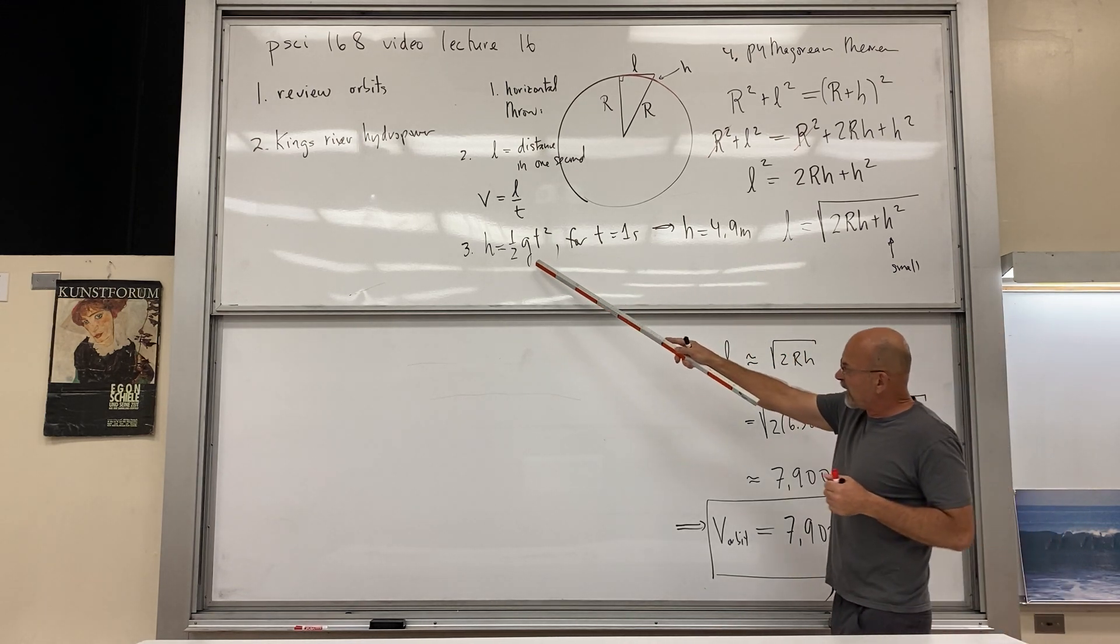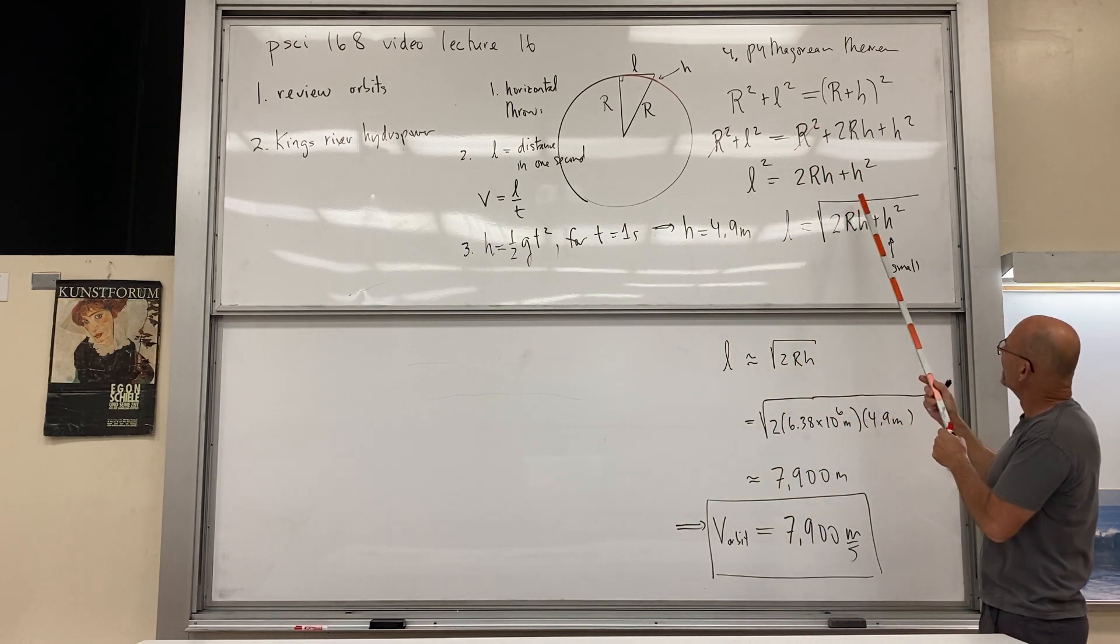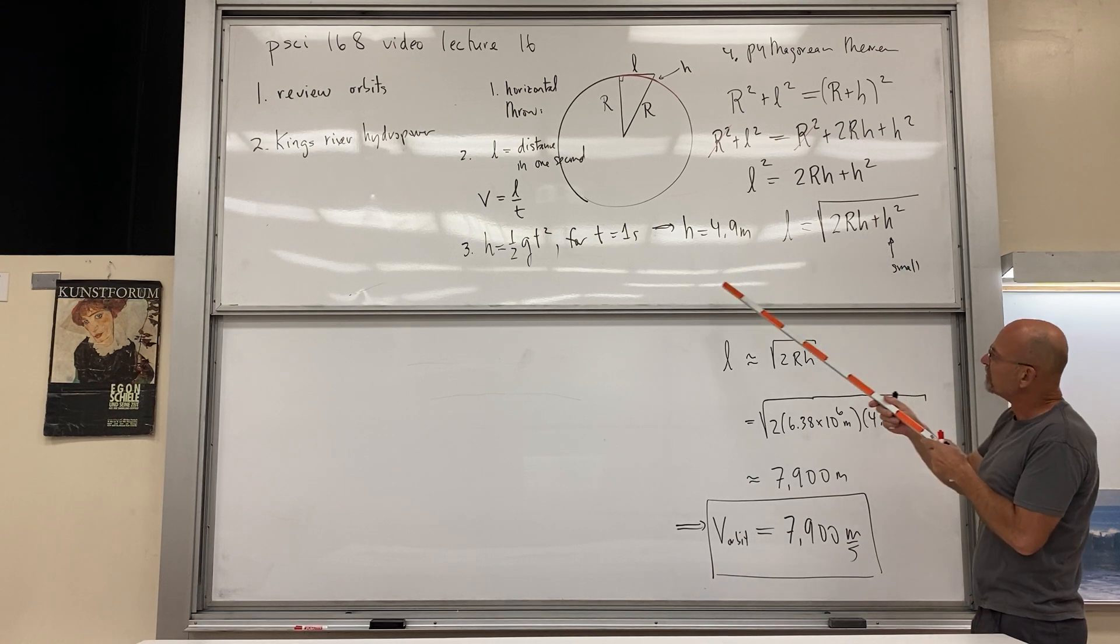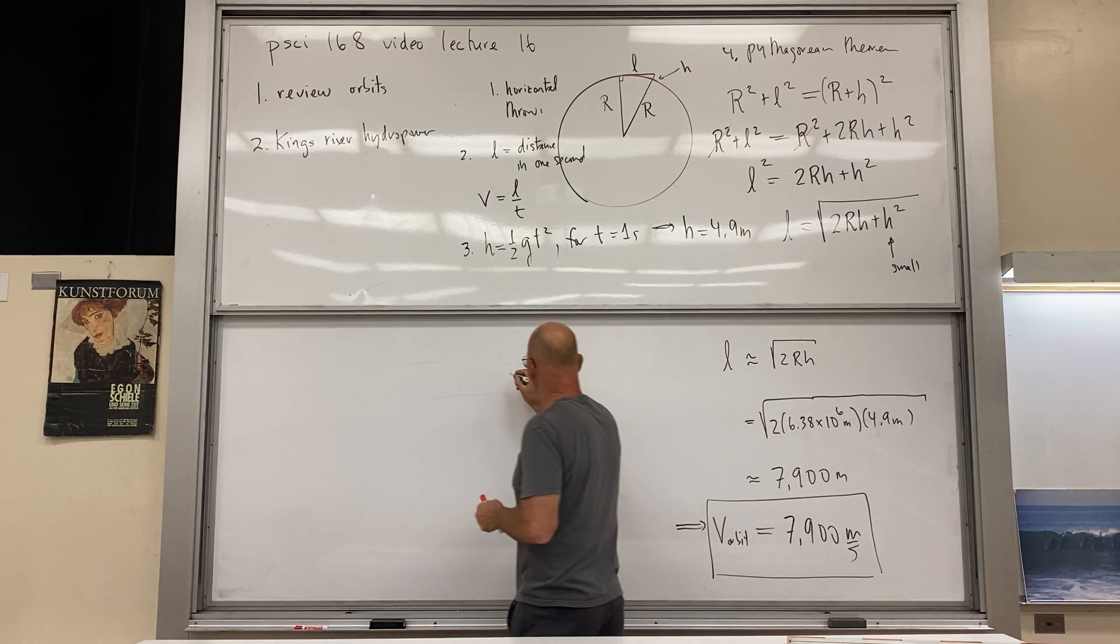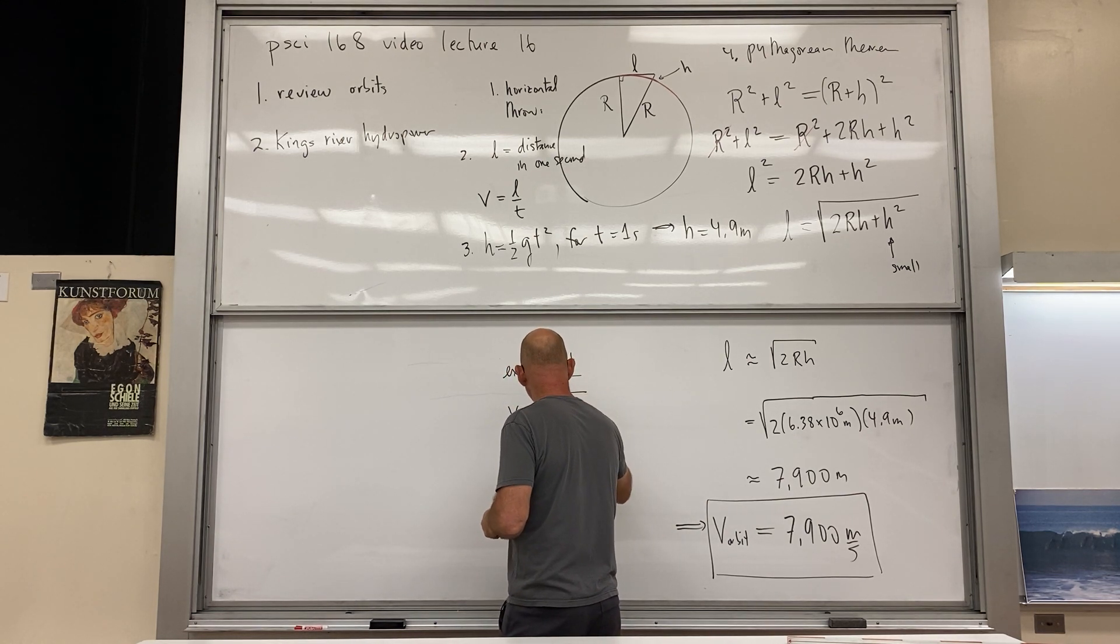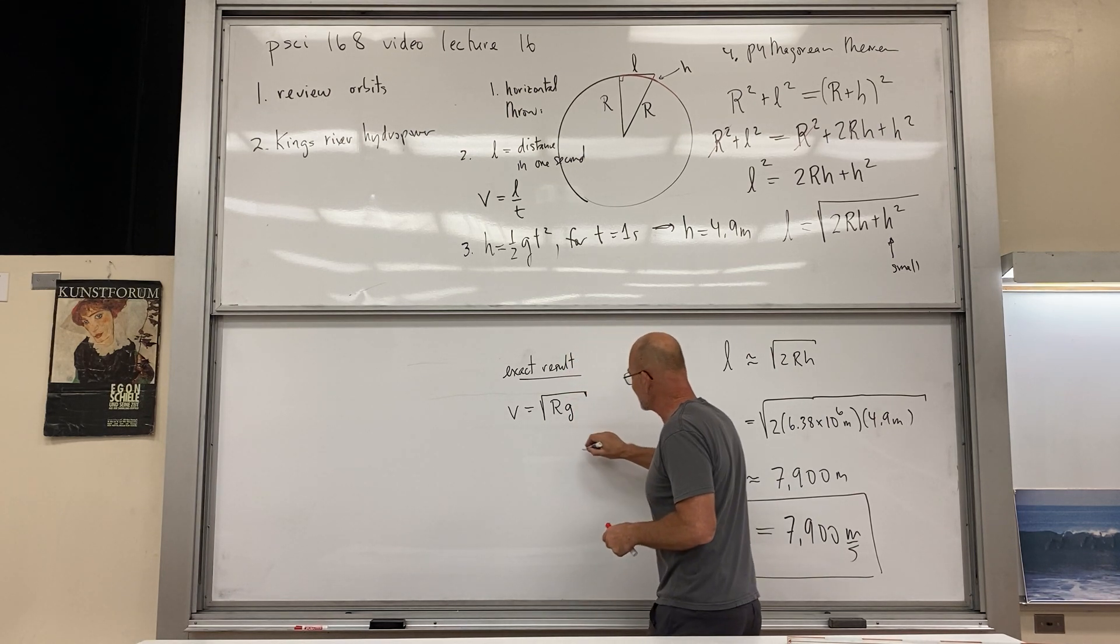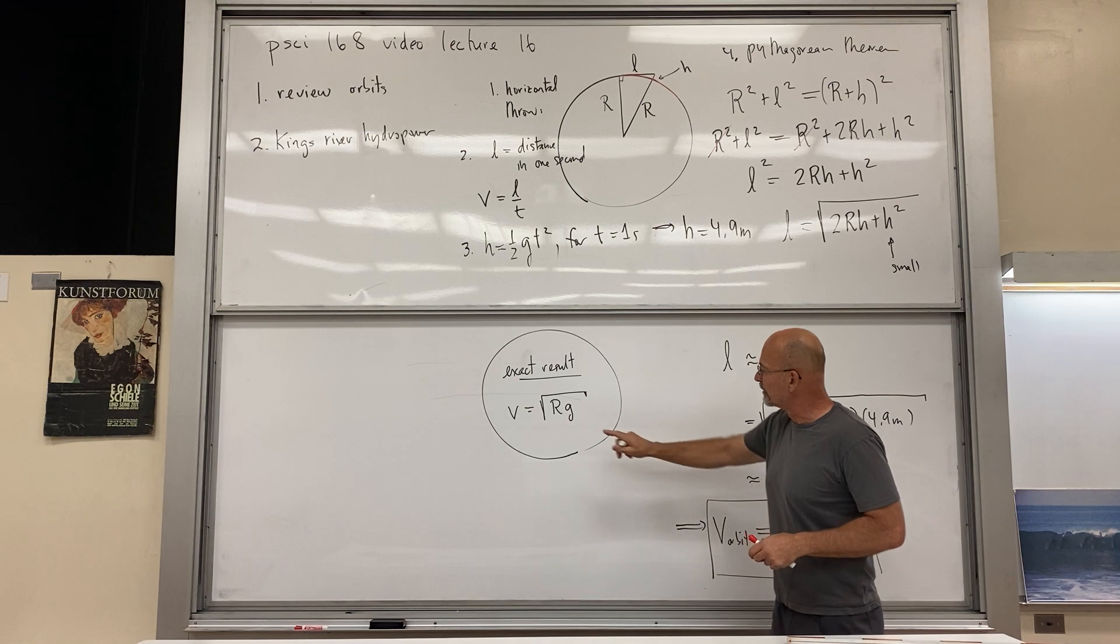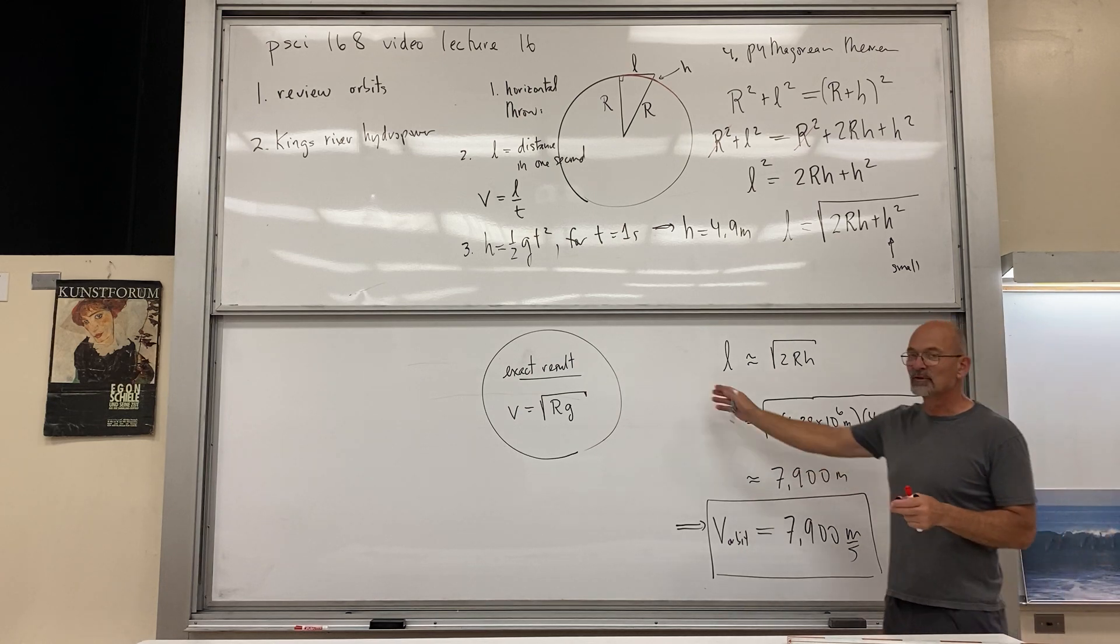And this is an interesting problem. There are ways to—so I'm going to plug in, in fact what one can do is plug in this one half g t squared expression in here and then divide by t, and what you'll find is the exact formula. I'm just going to write the exact formula. Result is that v is equal to the square root of r times g. Very interesting, okay? This would be the exact result.